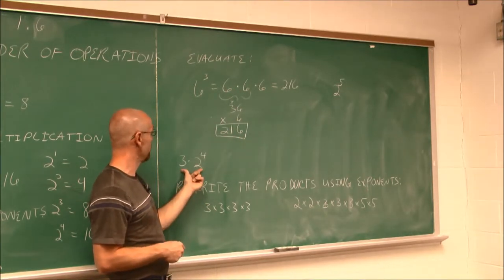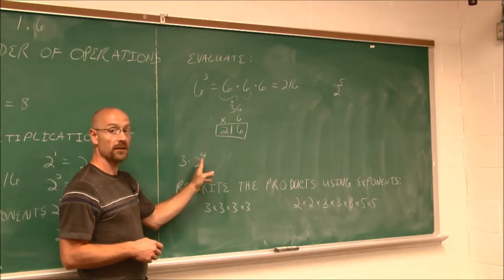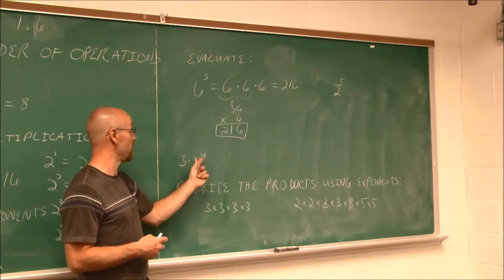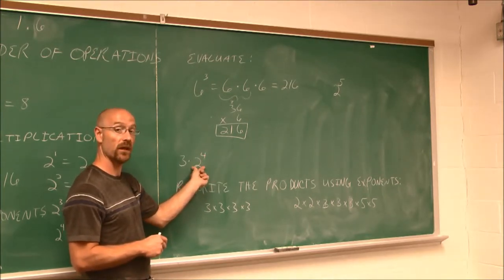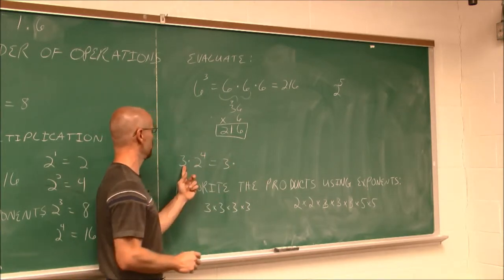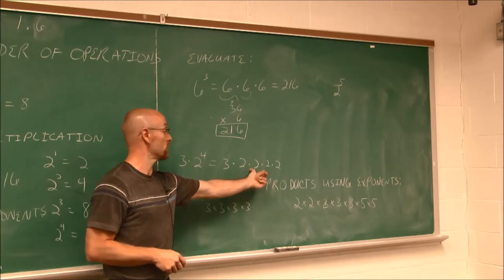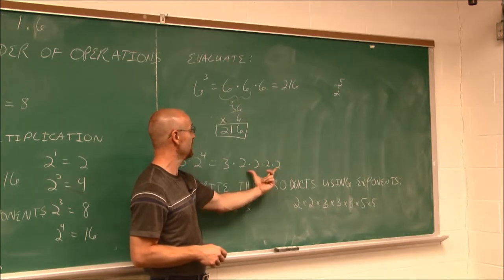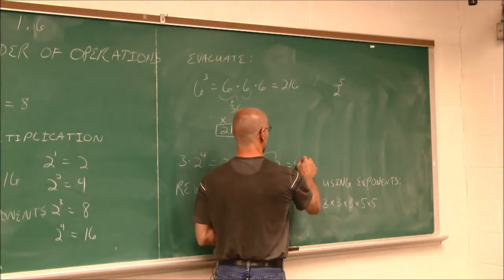Let's look at this example. We have to be careful with exponents because they only apply to the base they are adjacent to. I would not say 3 times 2 is 6 and then raise it to the fourth power — I have to evaluate the exponent first. So with 3 times 2 to the fourth, I rewrite it as 3 times (2 times 2 times 2 times 2). Evaluating those four 2's: 2 times 2 is 4, times 2 is 8, times 2 is 16. So this value is 16, and 3 times 16 is 48.